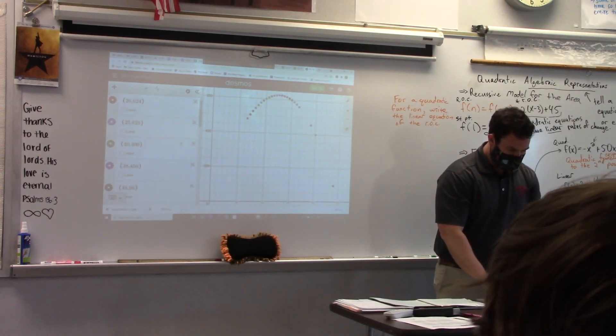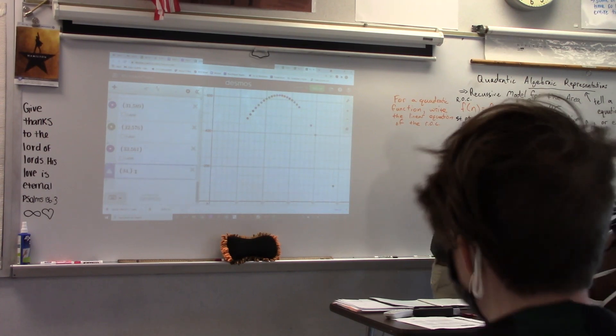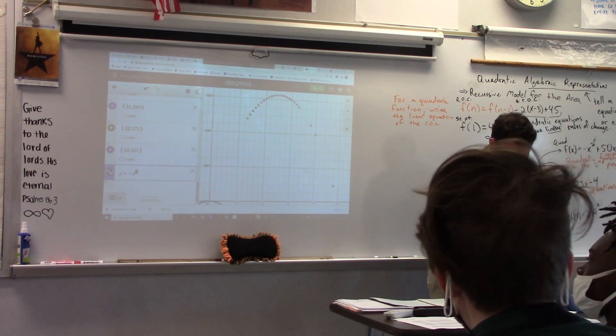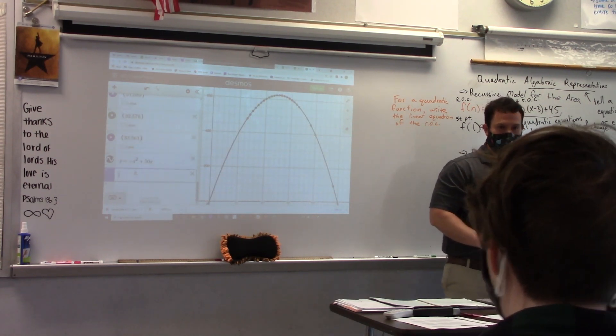So let's check it. You put a time model? Oh, you already did. So y equals negative x squared plus 50x. That work? Yeah, okay.